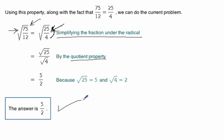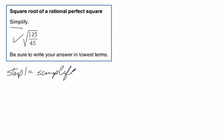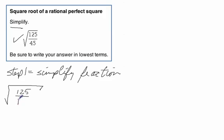Let's look at another quick example. Here we're simplifying the square root of 125 over 45. Remember, the first step is to simplify the fraction under the radical. Notice that both 125 and 45 are divisible by 5, so that gives us the square root of 25 over 9.